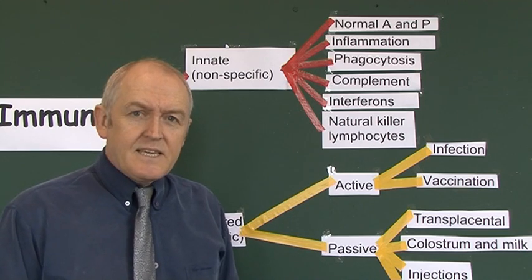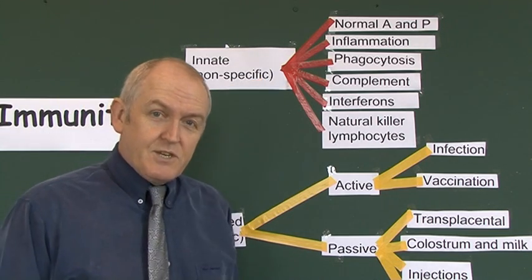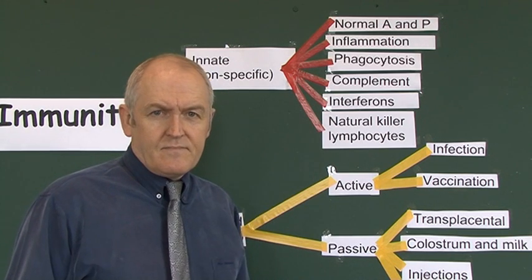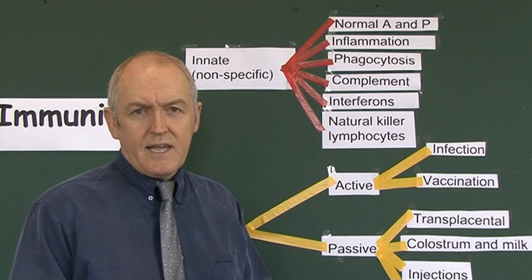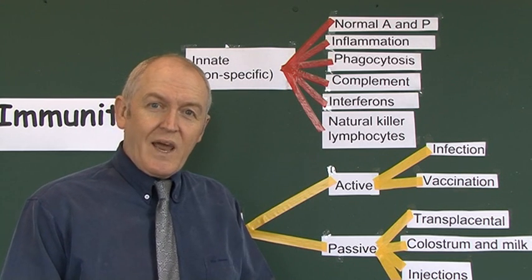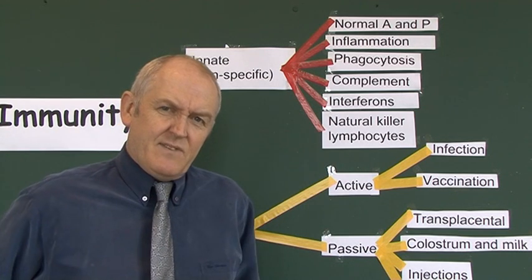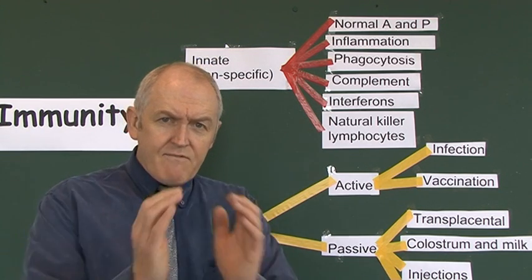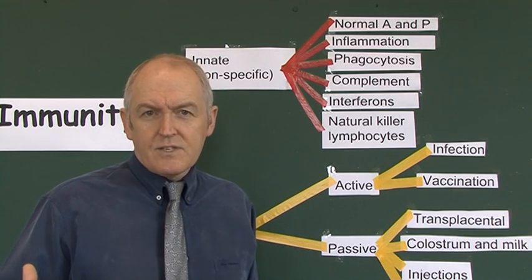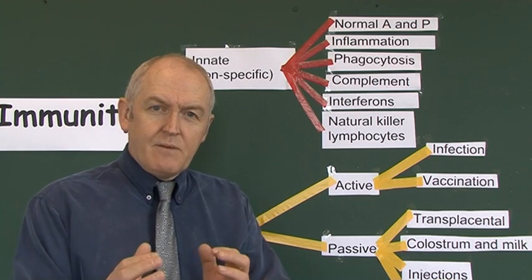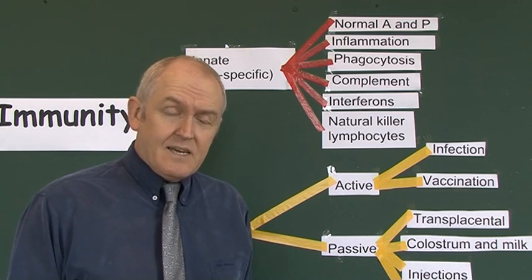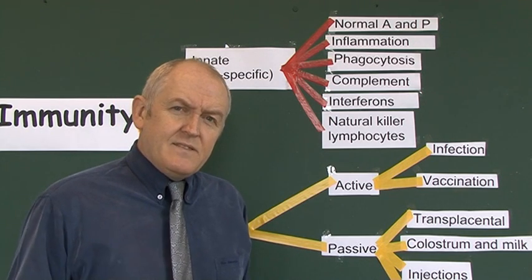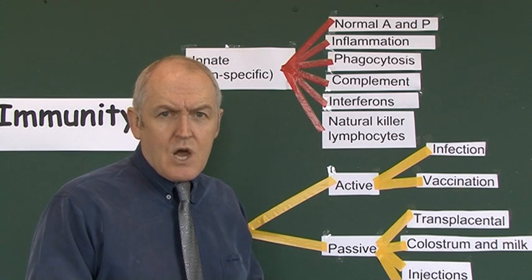The next component of the innate non-specific immune system is inflammation — the inflammatory reaction. This is a generic reaction. Inflammation is recognised by heat, pain, redness, swelling, and loss of function in a tissue. The inflammatory reaction is very protective: you get vasodilation and useful chemicals come out of the blood. White blood cells come out to mediate local immunity and promote local healing. Inflammation is the essential first stage of the healing process, and it's nonspecific — the reaction is the same regardless of the cause.